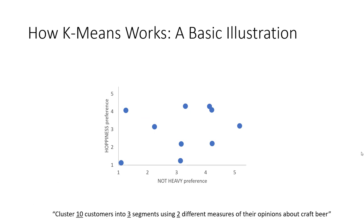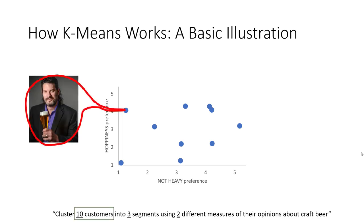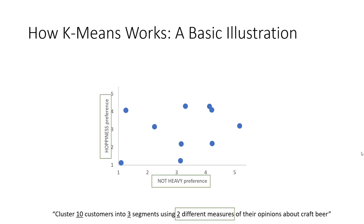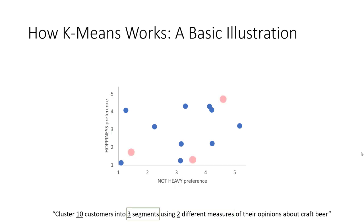Let me give you an illustration of how k-means works. In this scenario we're going to cluster ten customers into three segments using two different measures of their opinions about craft beer. Each dot on the scatter plot represents one of our ten customers. One measure asks whether they don't like heavy beer — a score of five means they really don't like heavy beer, and a one means they prefer heavy beer. The other measure is hoppiness — a score of five means they really like hoppy, bitter beers, and a one means they don't. Looking at the scatter plot, customers are spread across this space in different degrees.